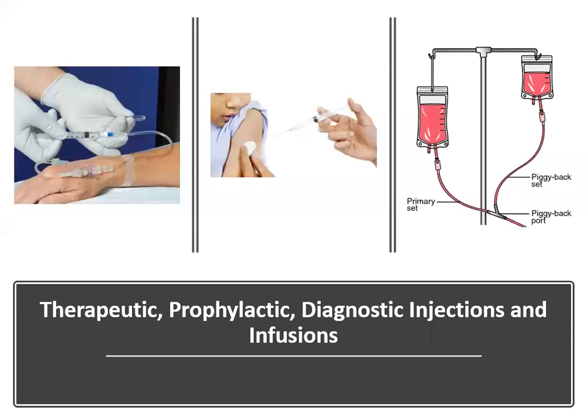Starting on page 731, we have codes for therapeutic, prophylactic, and diagnostic injections and infusions other than chemotherapy. Remember at the start of the medicine section we talked about immune globulins and mentioned that their administration would be coded later in this section — we have now made it to that section, and this is where we capture that service.